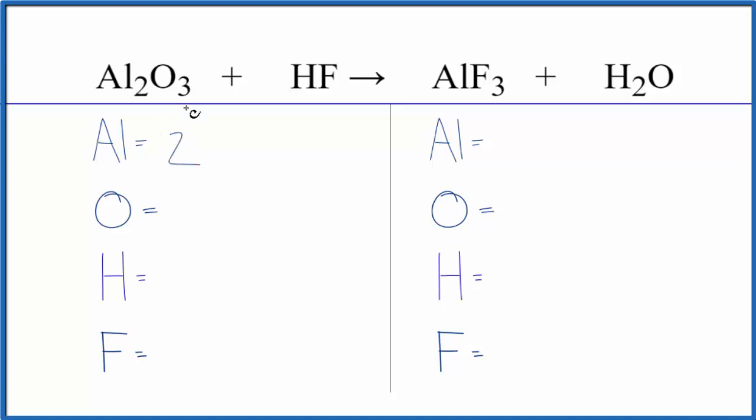We have two aluminum atoms, three oxygens, one hydrogen, and one fluorine. On the product side, we have one aluminum, one oxygen, two hydrogens, and three fluorine atoms.